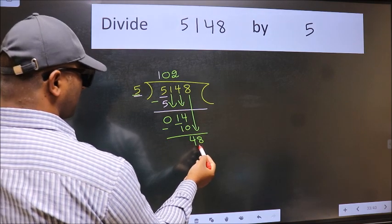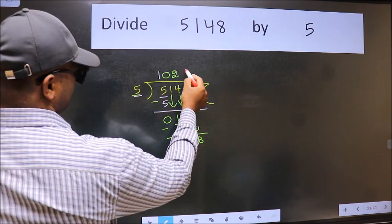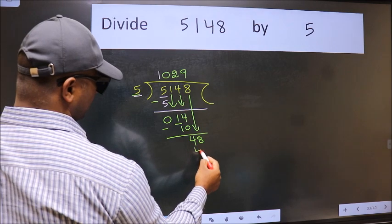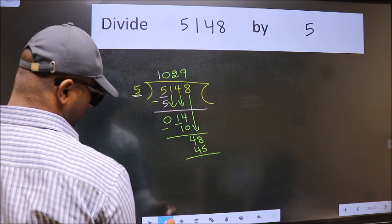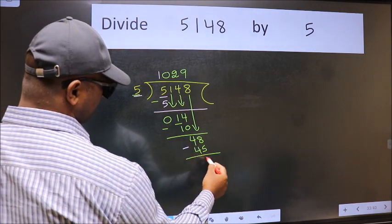After this, bring down the beside number. So 8 down. A number close to 48 in the 5 table is 5 nines 45. Now we subtract. We get 3.